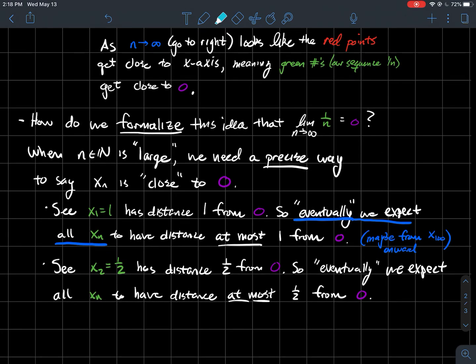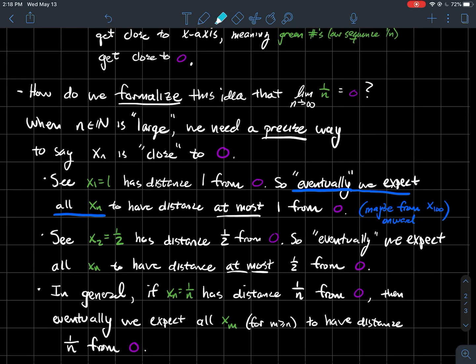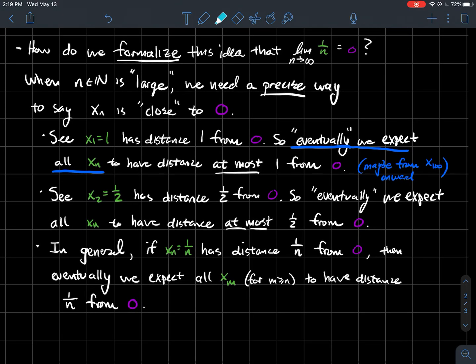x₂ is a half, and x₂ has distance one half from your limit zero. So again, eventually what we expect is that all the xₙ after some point should have distance at most one half from zero as well. In general, xₙ is one over n. That has distance one over n from zero. Eventually, I expect all the rest of the terms for m greater than or equal to n to have distance at most one over n from zero. So as you go farther out in the sequence, you should be getting close to that limit.